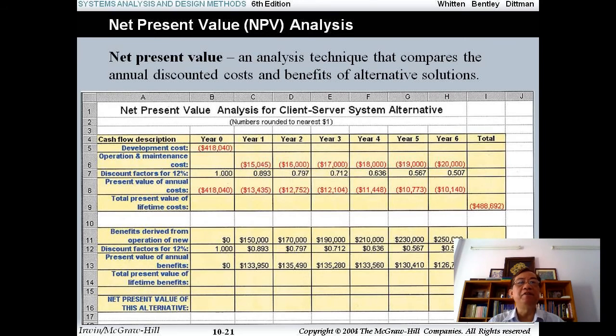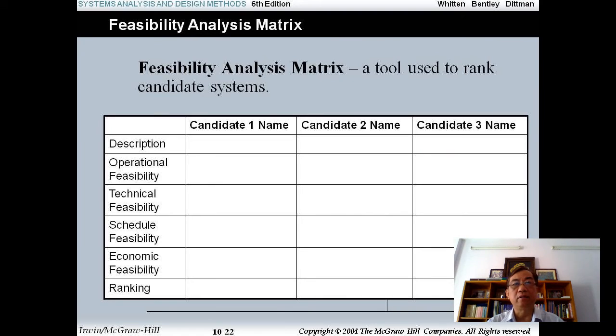Here is a feasibility analysis matrix. You see the matrix with columns and rows. Feasibility analysis matrix is a tool used to rank the candidate systems: candidate 1, candidate 2, and candidate 3. And the description. Because you have many candidate systems for your organization, so you make a comparison for them.